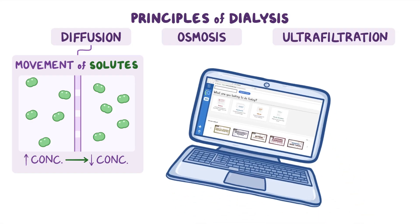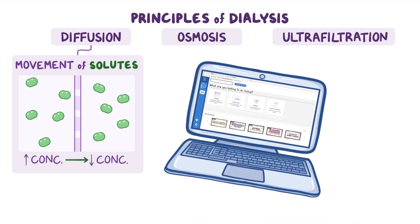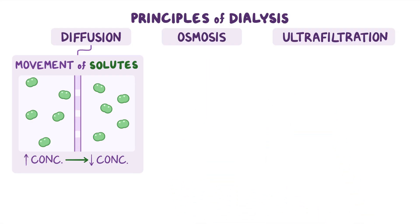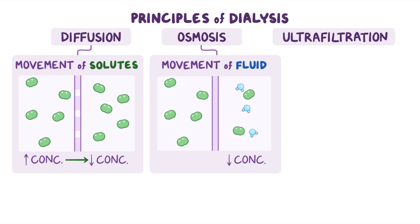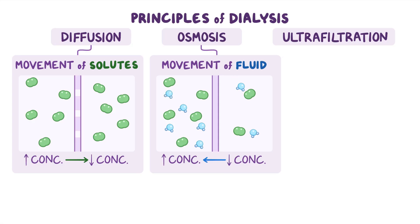Osmosis refers to the movement of fluid from an area of lesser solute concentration to an area of greater solute concentration. For example, glucose creates an osmotic gradient across the membrane and is able to pull excess fluid through that gradient.